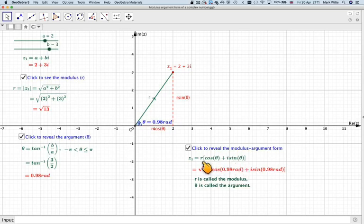Now in some books, they write that as r cis theta. OK? So we can see in this particular example, r is root 13, cos of the angle in radians, 0.98 radians, plus i sine 0.98 radians. This is another way of being able to write a complex number.